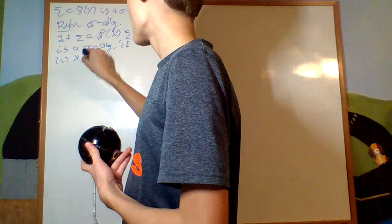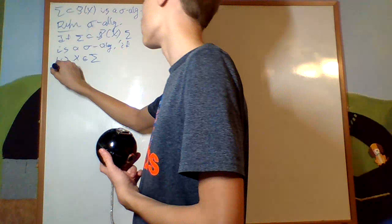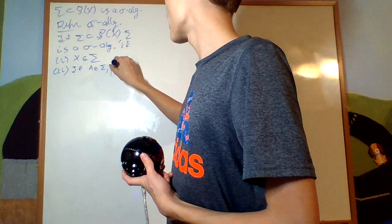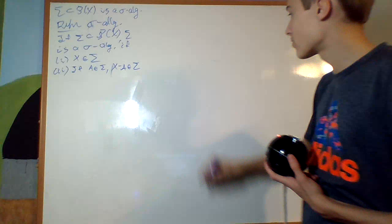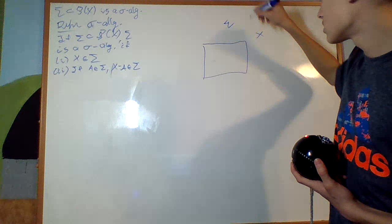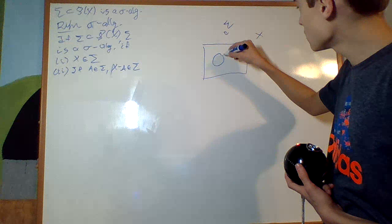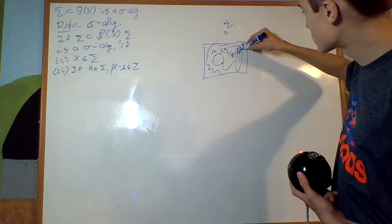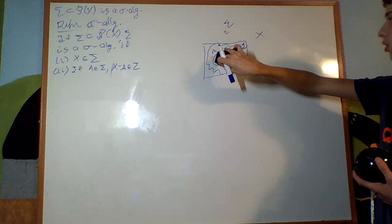Condition two: it's closed under complements. So if A is an element of sigma, then the complement X minus A is also an element of sigma — that's X with all the elements of A removed. So if I have A in the sigma algebra, then all that space outside of A but still inside of X — X minus A — is also in the sigma algebra. Think of it as taking the whole space and punching out A.